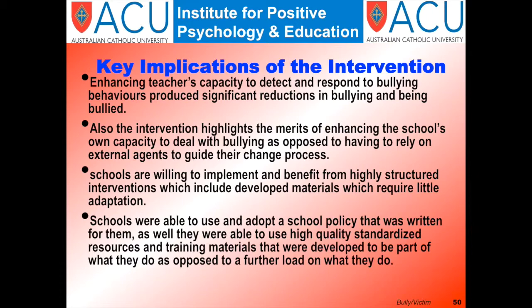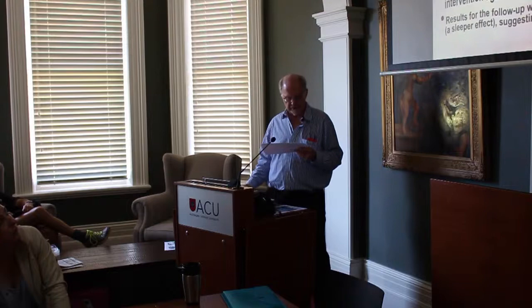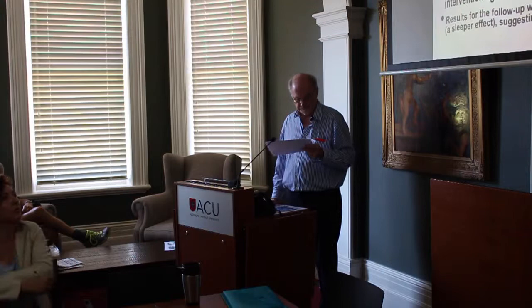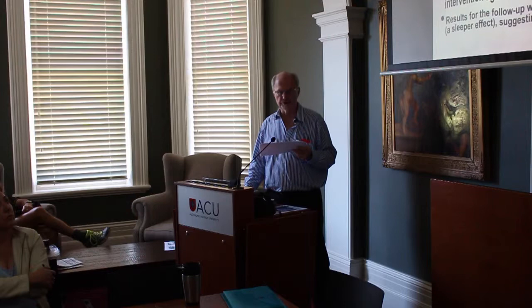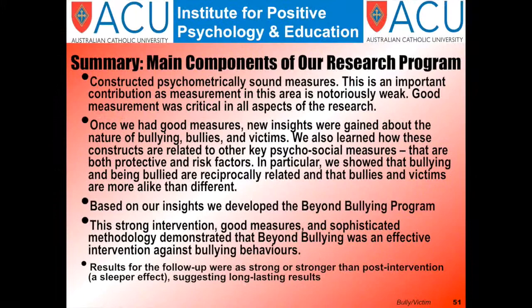Summarizing, I've outlined three main components. First, the focus on psychometrically reliable and valid measures was achieved — an important contribution as measurement in this area is notoriously weak. Good measurement was critical in all aspects of the research. Once we had good measures, new insights were gained about the nature of bullies and victims, and how these constructs are related to a whole variety of psychosocial and well-being measures that are both protective and risk factors.